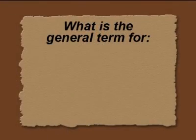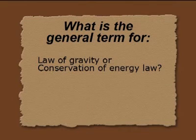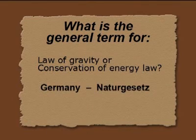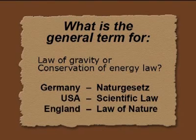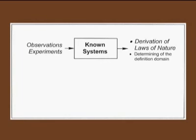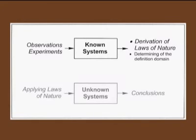What is the general term for the law of gravity or conservation of energy law? In Germany we say Naturgesetz, in the United States they say scientific law, and in England we say law of nature — and I will use this term. In nature we observe systems by observation and experiments, and so we find out the laws of nature. Knowing the laws of nature, we can apply them to unknown systems and draw conclusions.